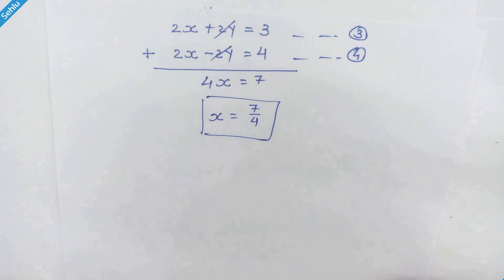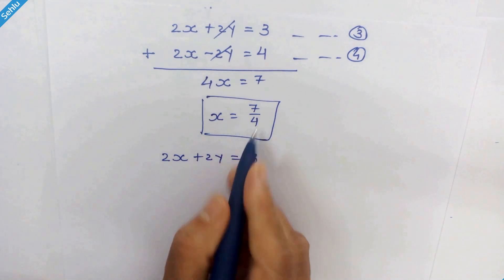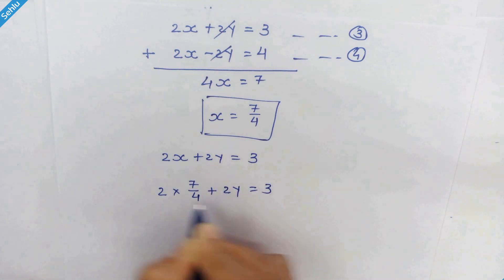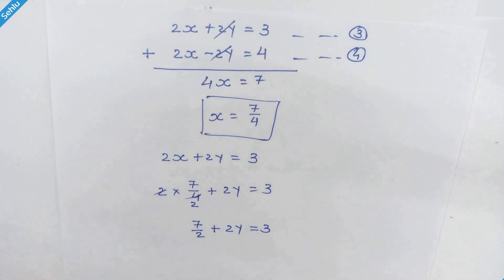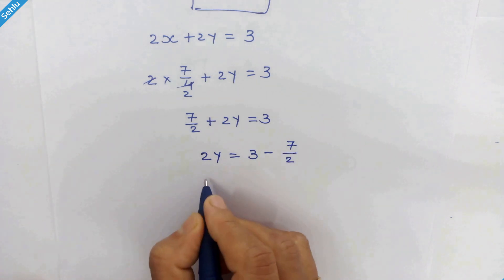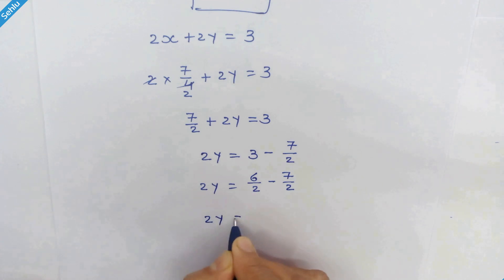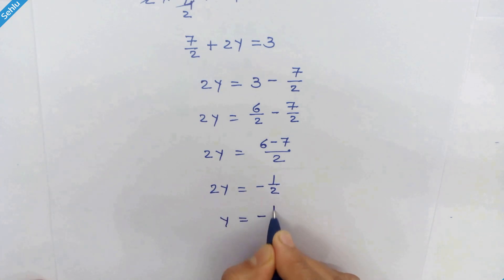Now we have the value of x and we can substitute it into any of our equations to solve for y. Let's use equation 3: 2x plus 2y is equal to 3. Putting x equal to 7 upon 4, we get 2 times 7 upon 4 plus 2y is equal to 3, which simplifies to 7 upon 2 plus 2y is equal to 3. Moving 7 upon 2 to the right-hand side: 2y is equal to 3 minus 7 upon 2. Taking LCM, that is 6 upon 2 minus 7 upon 2, so 2y is equal to minus 1 upon 2. Dividing both sides by 2, y is equal to minus 1 upon 4.